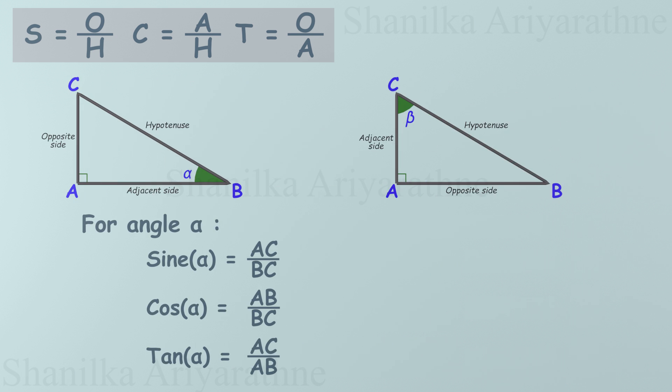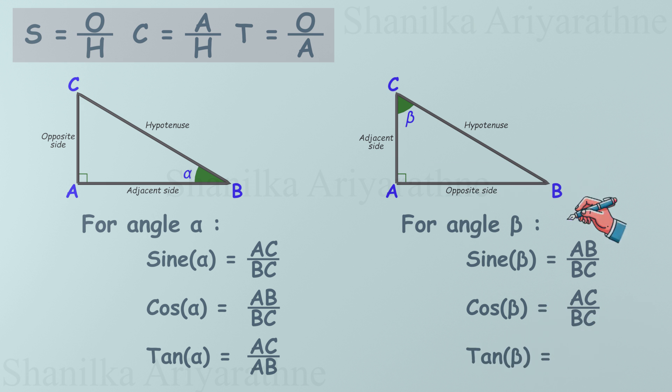Now let's consider the angle beta. For angle beta, sine of beta: the opposite side is AB divided by the hypotenuse BC. Cosine of beta: the adjacent side is AC divided by the hypotenuse BC. Tangent of beta: the opposite side is AB divided by the adjacent side AC. See how things flip depending on the angle? The hypotenuse stays loyal in its spot, but the opposite and adjacent sides switch roles. It's all about the angle you're looking at.